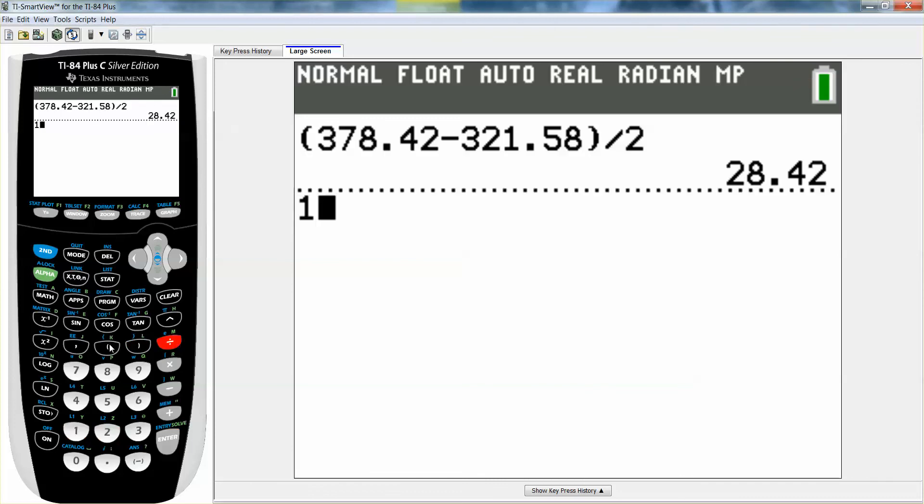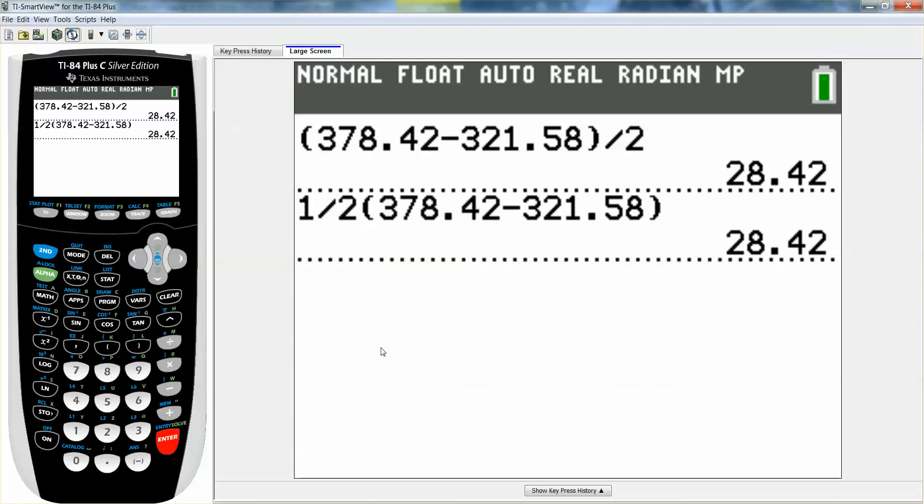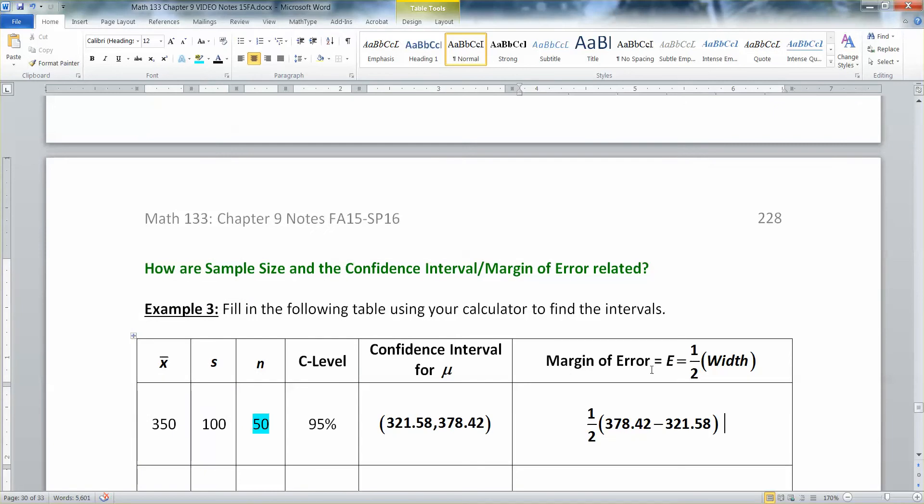Or if you like, you could say one half times 378.42 minus 321.58. So whichever way you're more comfortable with is fine. So it's 28.42. Either way you slice it.